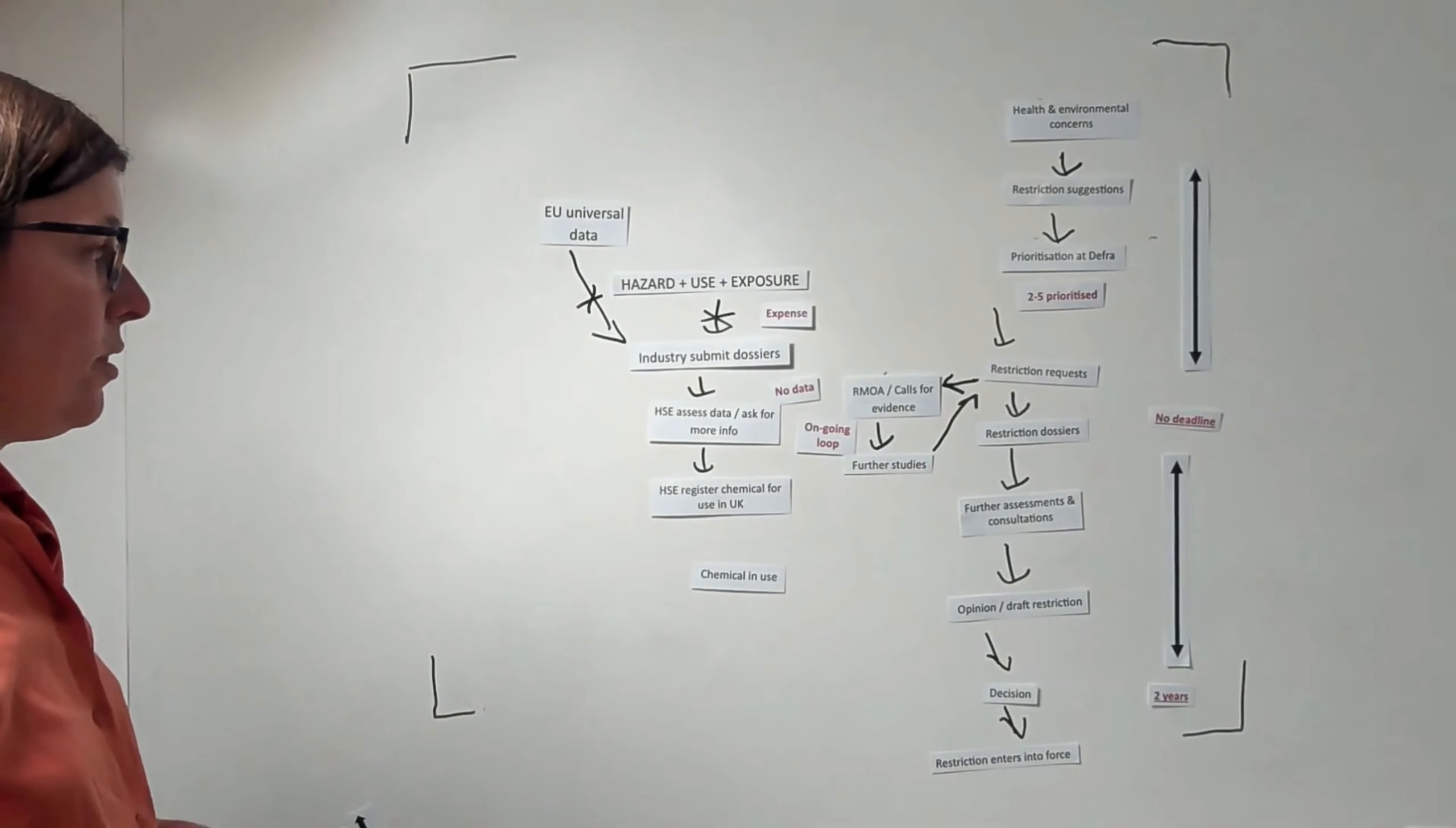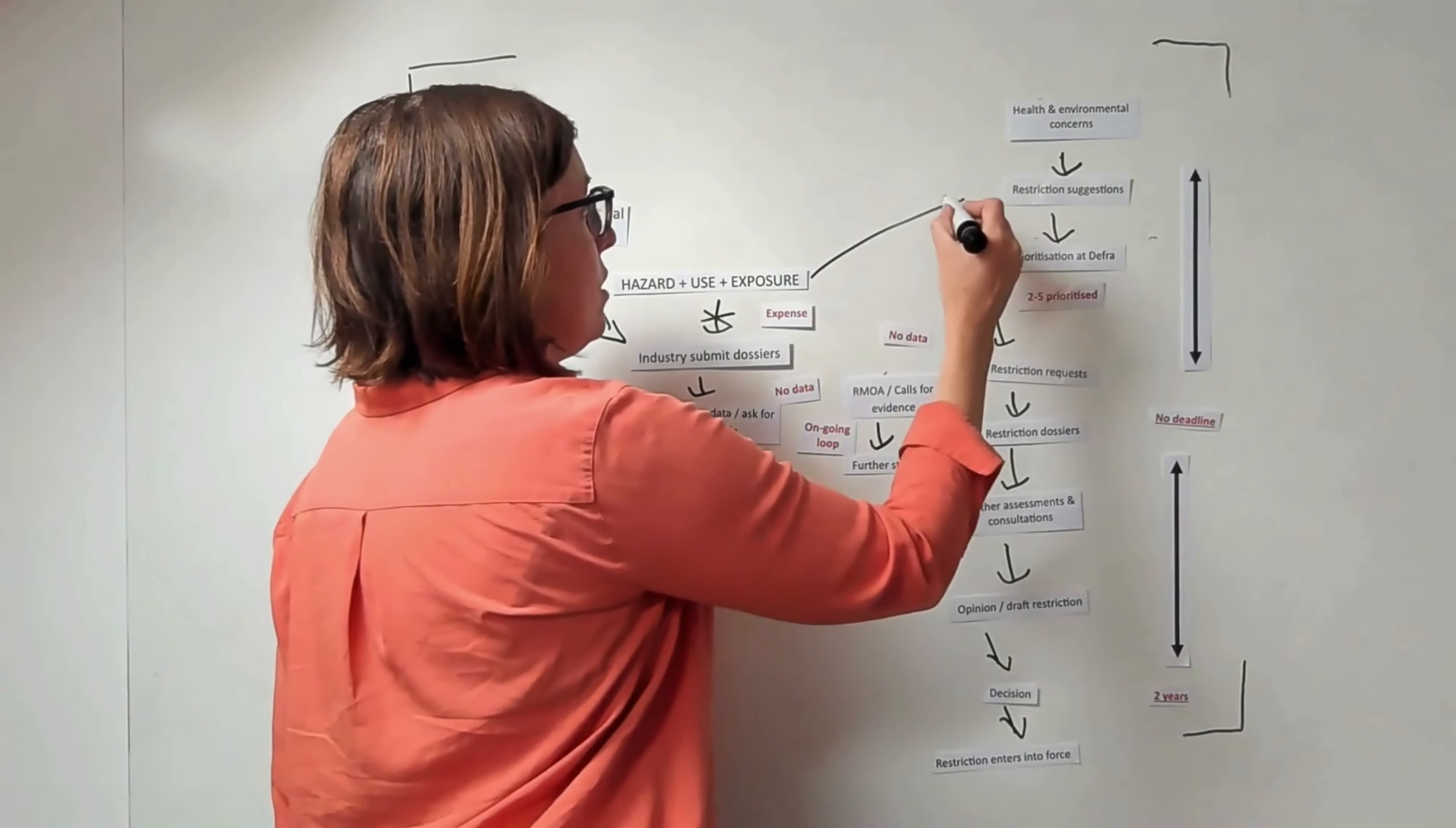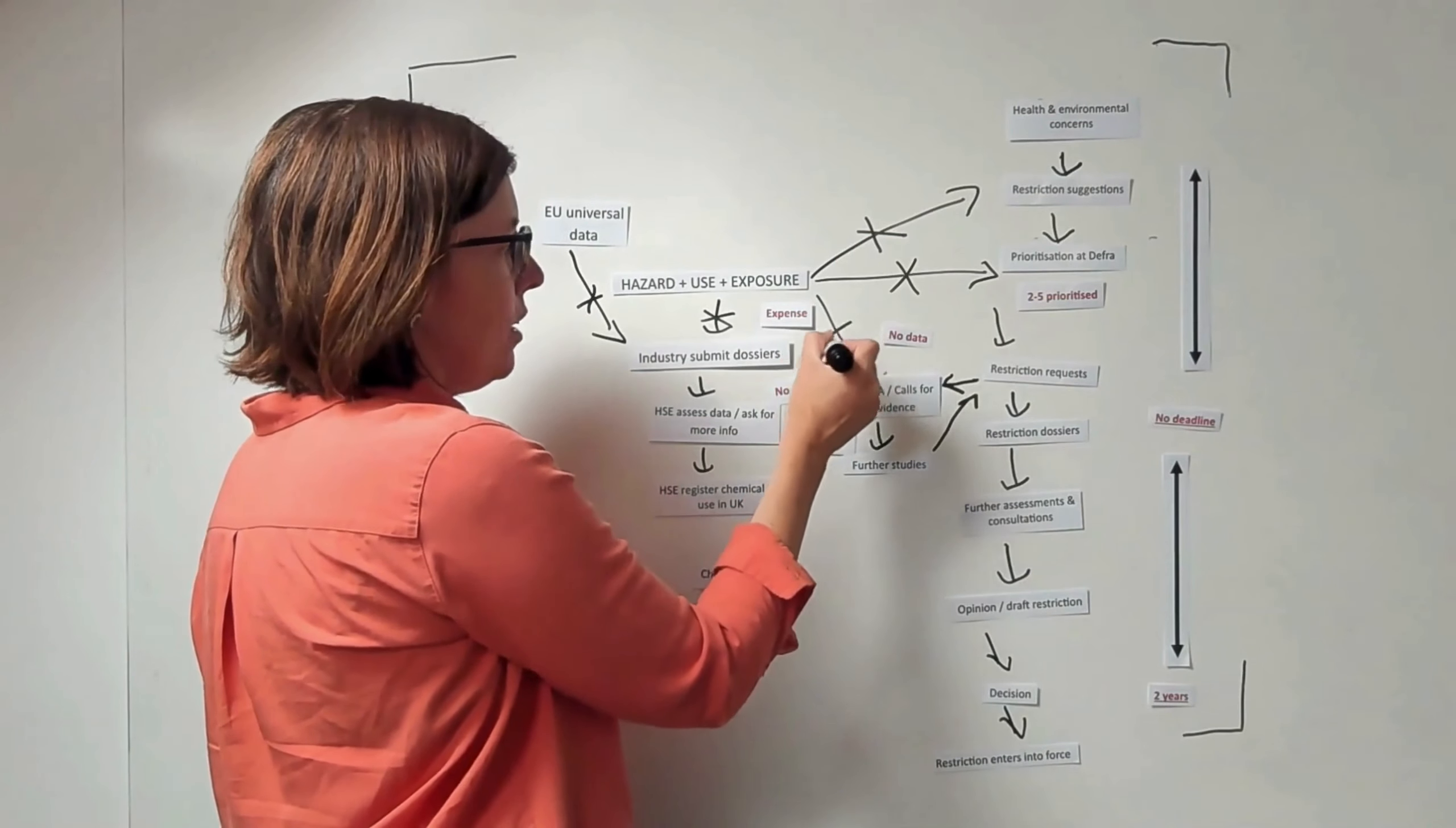One of the other issues that we have is that many of these restriction processes have started calling for data on either GB use and exposure, which we don't have. We've got no data that is able to inform any of these processes. We can't identify it for the restriction suggestions. Sometimes DEFRA when they're prioritizing have said, 'Well, what about GB use?' But we don't know and we don't have that data. Similarly, the RMOAs have sometimes called for this data and it's not there.